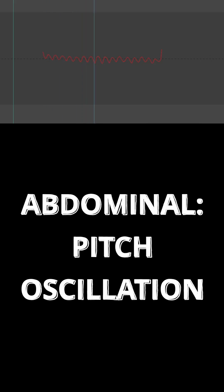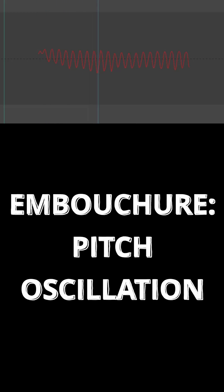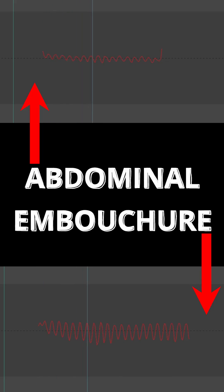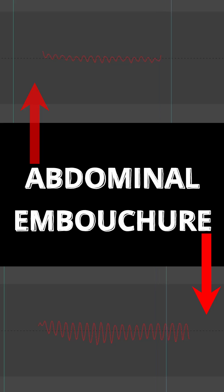These two graphs represent the change in pitch during both vibratos. First, abdominal vibrato. Second, embouchure vibrato. And side by side. Note that the embouchure vibrato fluctuates more in pitch than the abdominal vibrato.